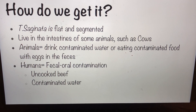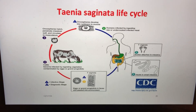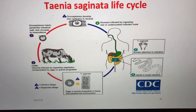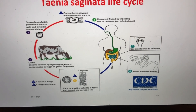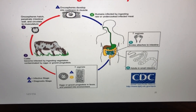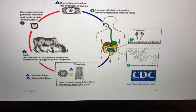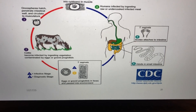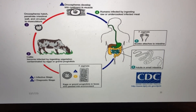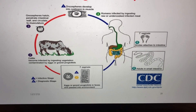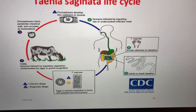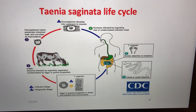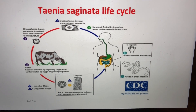The worm is flat and it is segmented. Now I'll be explaining the life cycle of this parasitic worm. Either the eggs or the gravid proglottids in feces are passed into the environment. Once in the environment, cattle can be grazing and become infected when they ingest vegetation contaminated by eggs or gravid proglottids. Once these eggs are inside of the cow, they become oncospheres which hatch, penetrate the intestinal wall, and circulate to the musculature, or muscle tissue.